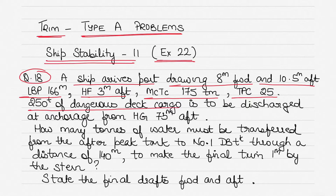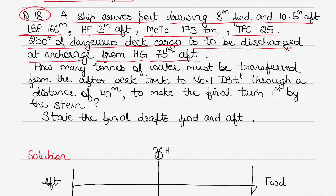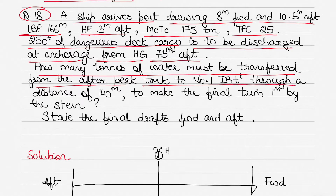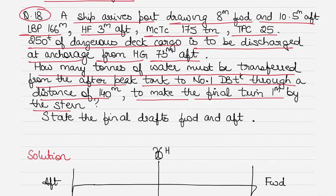250 tons of dangerous deck cargo is to be discharged at anchorage from HG. HG is the longitudinal distance from the midship (H) to the center of gravity of the deck cargo (G), so HG is 73 meters aft from midship. You also have to calculate how many tons of water must be transferred from the aft peak tank to number 1 double bottom tank through a distance of 140 meters to achieve 1 meter by stern. You must also state the final drafts forward and aft.